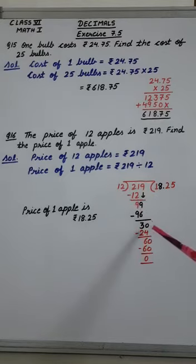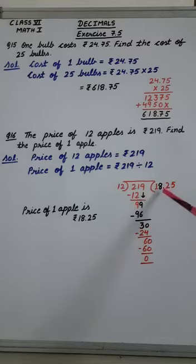So for that we have to put 0 and when we are putting 0 we have to put decimal here. Now 12 twos are 24.